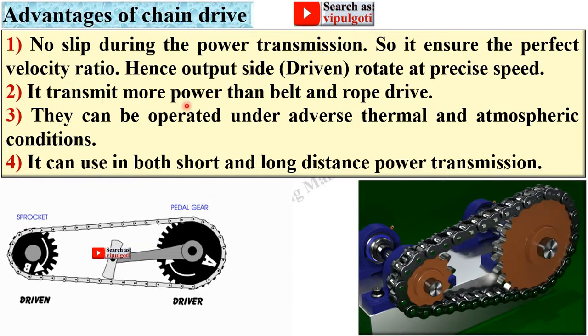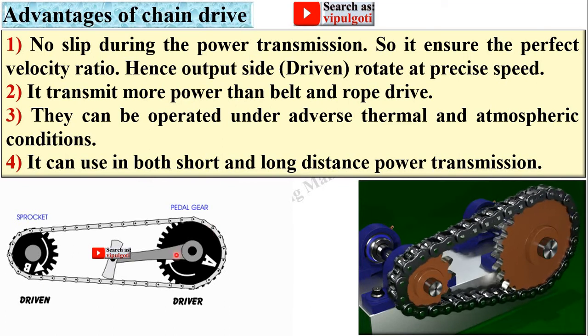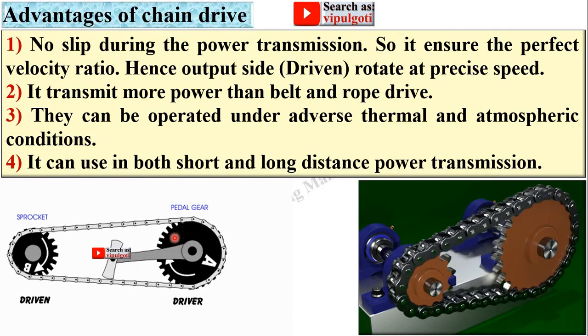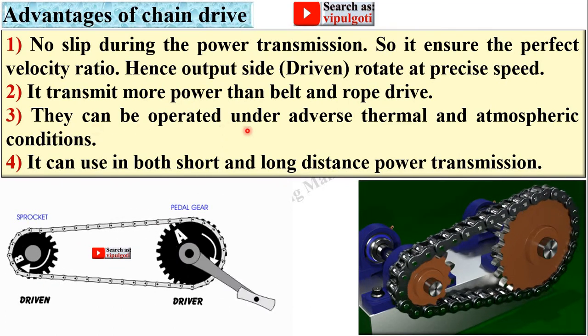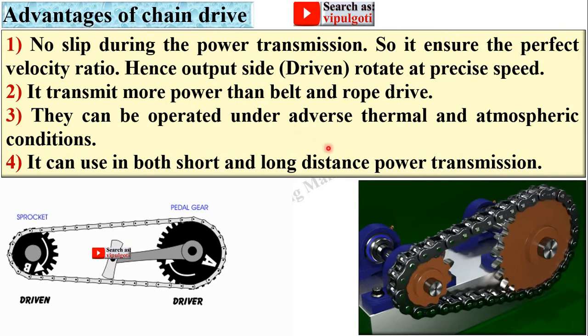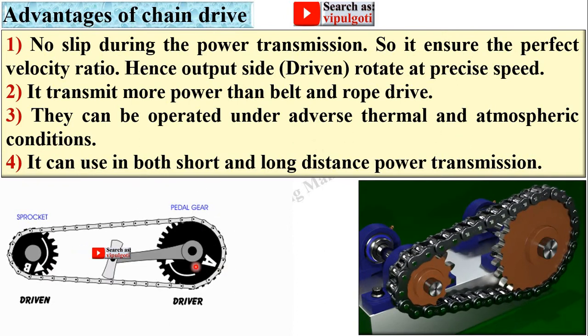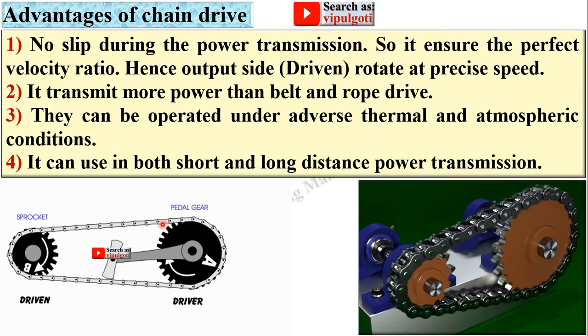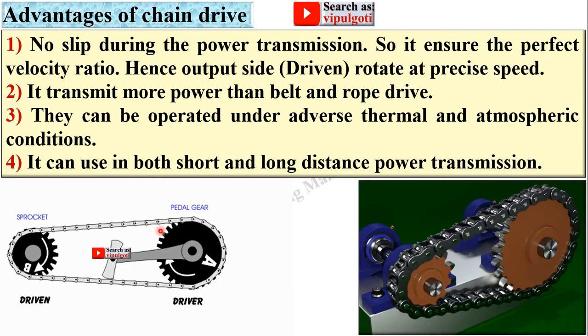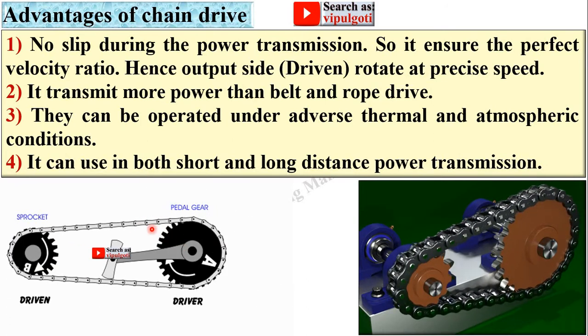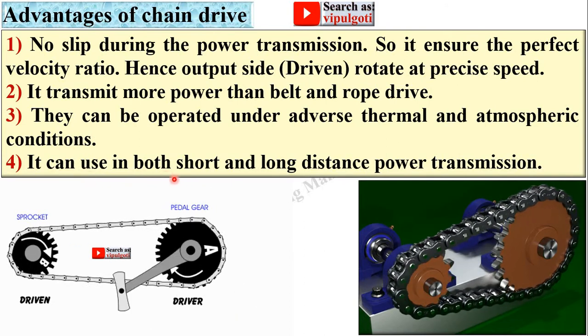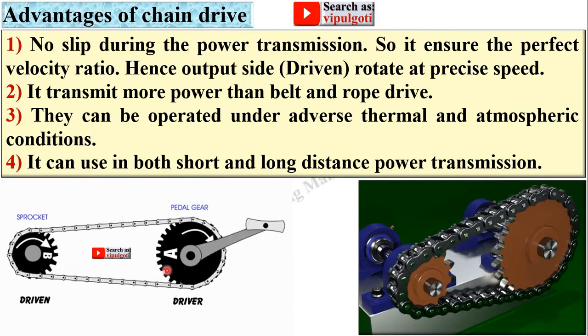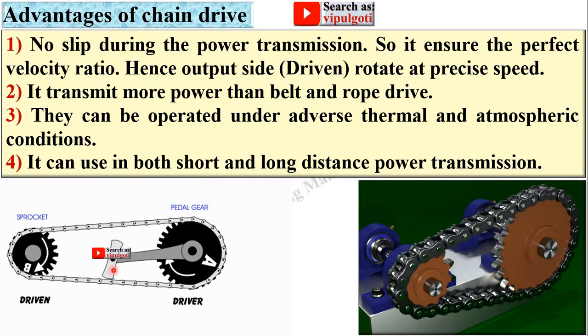It transmits more power than belt and rope drive. They can be operated under adverse thermal and atmospheric conditions because the sprocket as well as chain are made from metal. It can be used in both short and long distance power transmission.